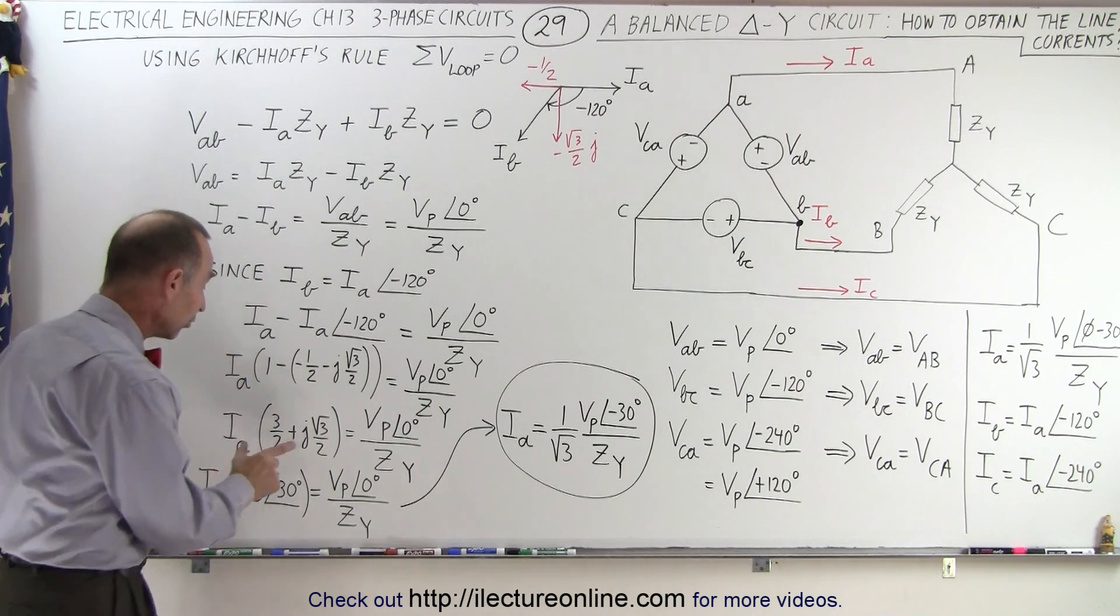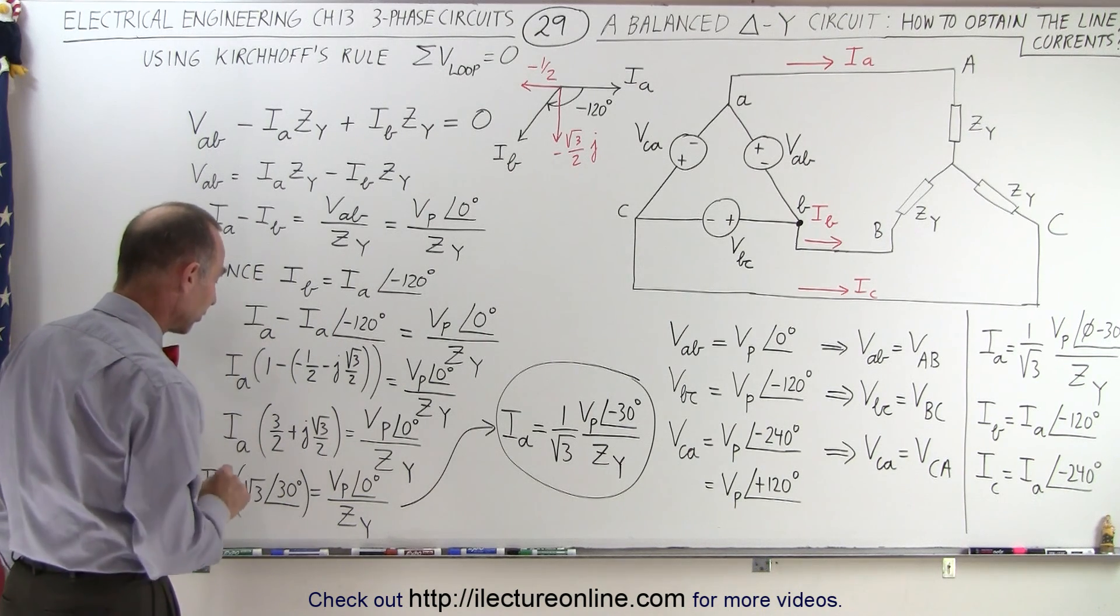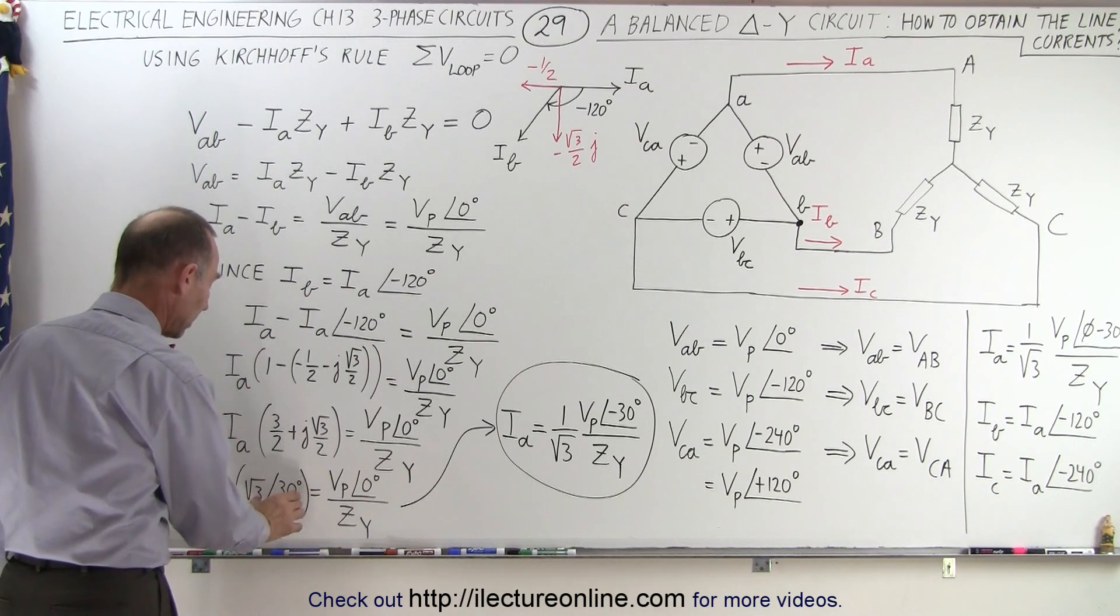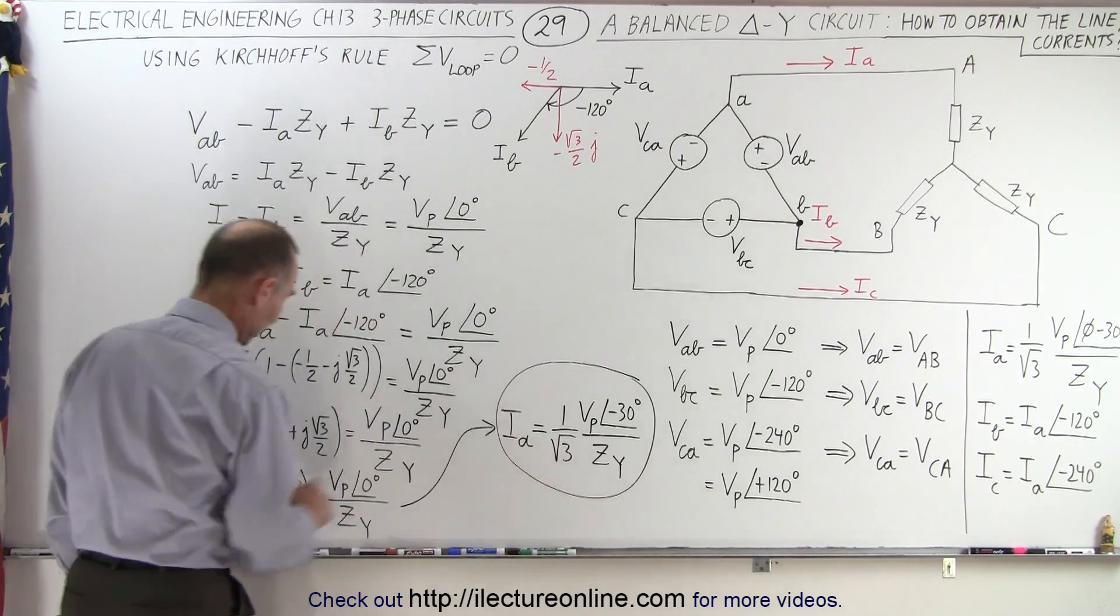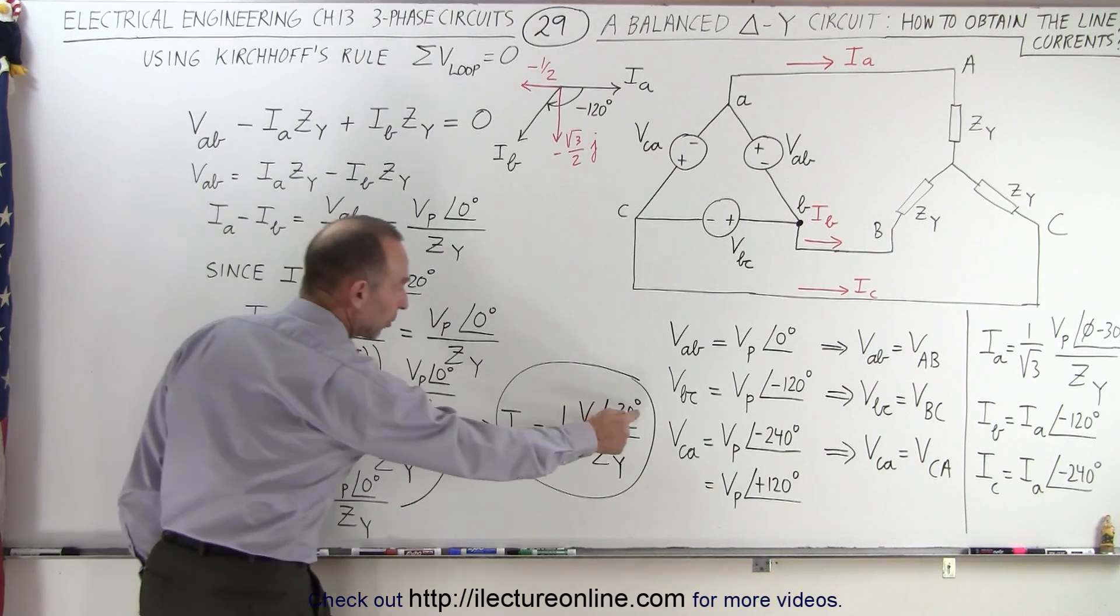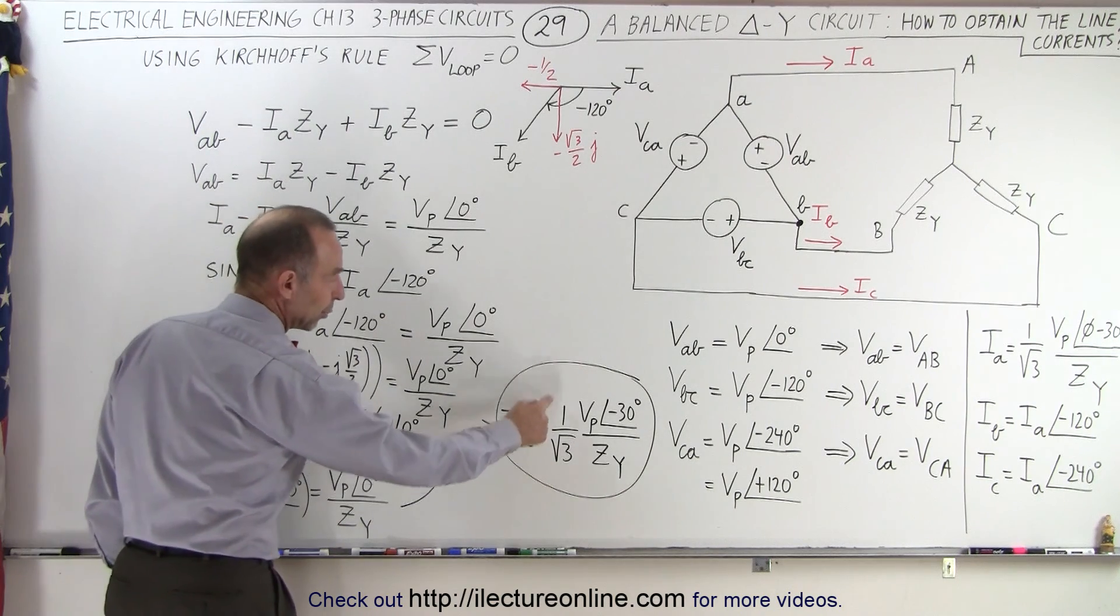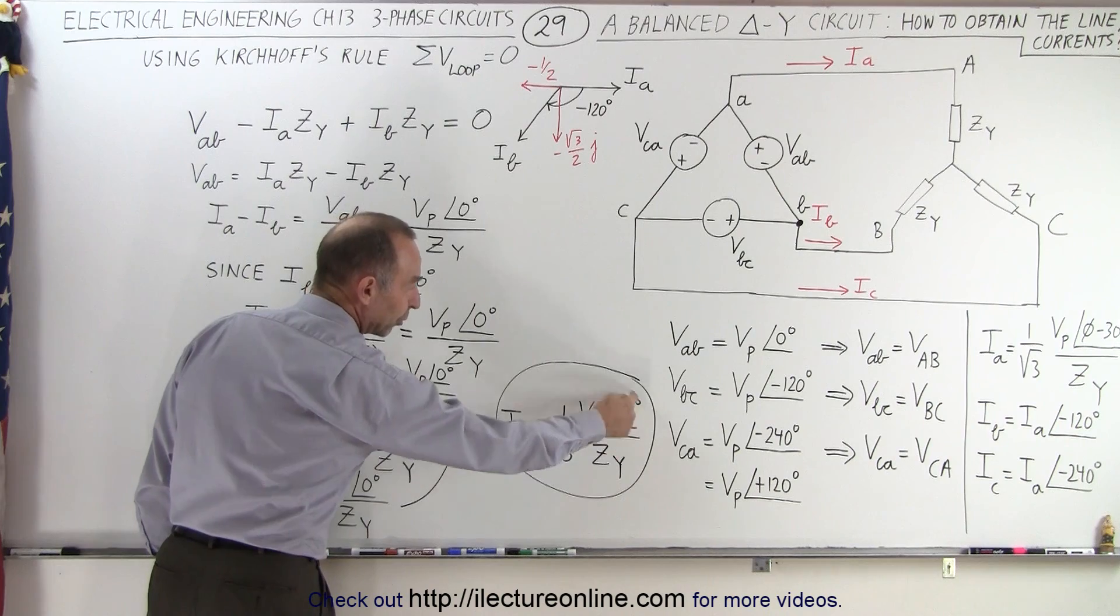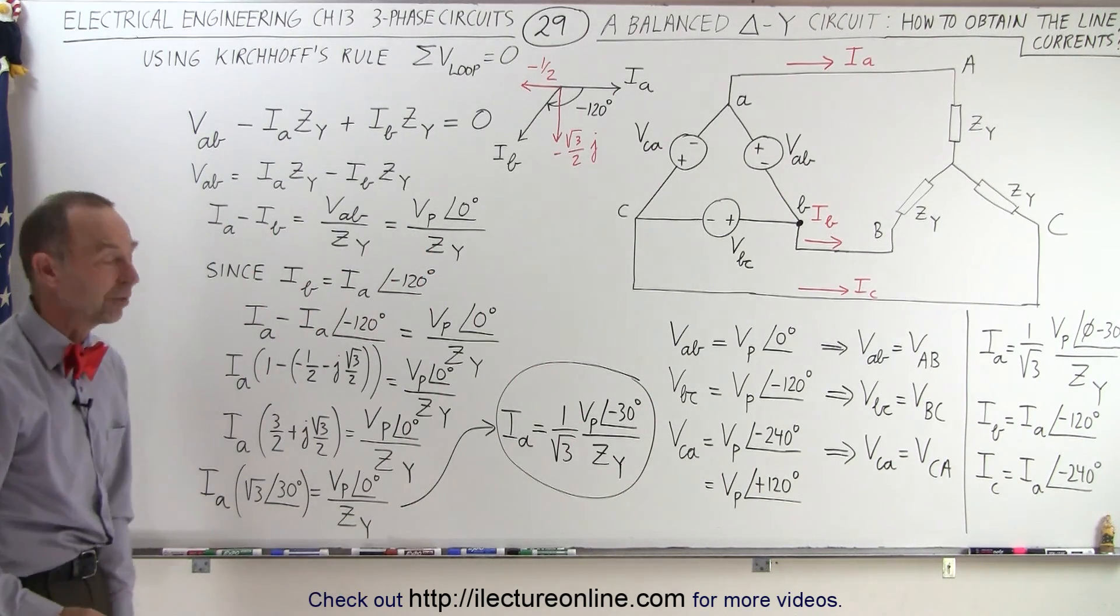Now we can write this in terms of magnitude and phase angle, which ends up being the square root of 3 with a phase angle of 30 degrees. And then if we divide both sides by the square root of 3 times the phase angle of 30 degrees, we end up with 1 over the square root of 3 on the right side, and then we have to subtract the phase angle of 30 degrees. And so therefore I sub A can be shown to be 1 over the square root of 3 times the phase voltage with a phase angle difference of minus 30 degrees, divided by the impedance of the load.